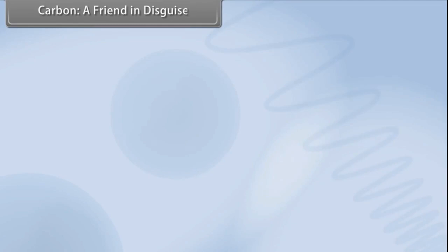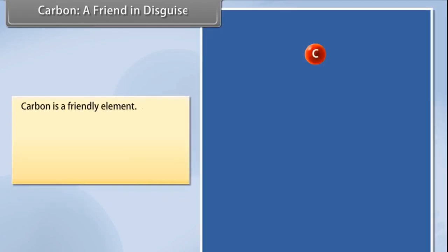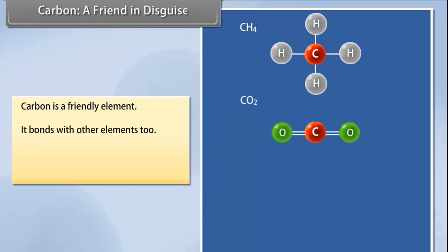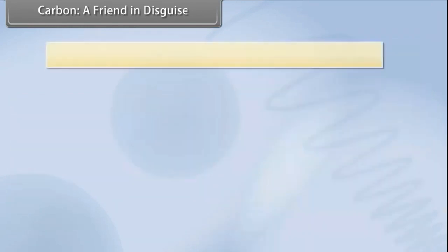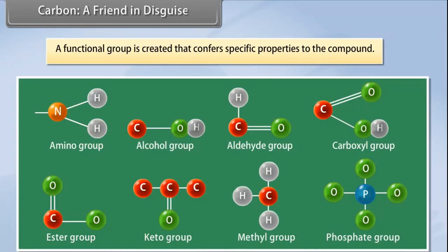Carbon: A friend in disguise. Carbon is a friendly element. It not only bonds with hydrogen but also with other elements such as halogens, oxygen, nitrogen, and sulfur. The compounds are formed in the same manner as with hydrogen; however, instead of hydrogen, the other element is used, and this element replacing hydrogen is called a heteroatom. A functional group is created that confers specific properties to the compound without considering the length and nature of the carbon chain.